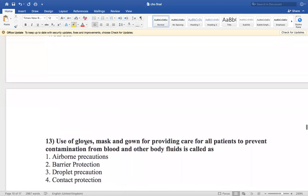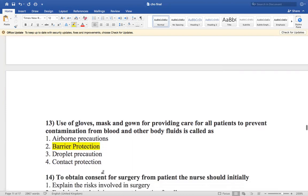Use of gloves, mask, and gown for providing care for all patients to prevent contamination from blood and other body fluids is called airborne precaution, barrier protection, droplet precaution, or contact protection. So this is our gloves, mask, and gown. This is our barrier protection. So option number two is the right answer.